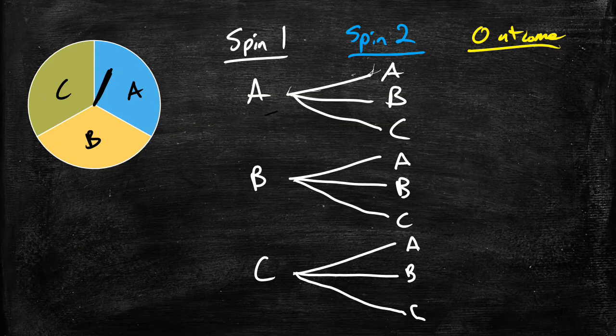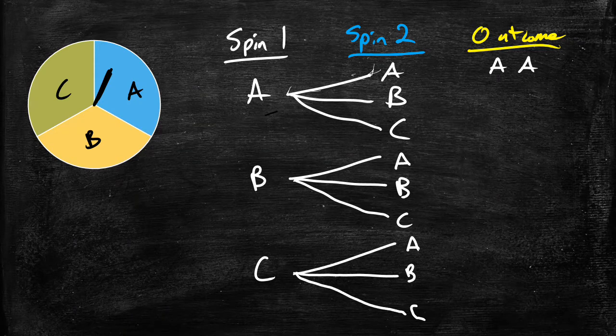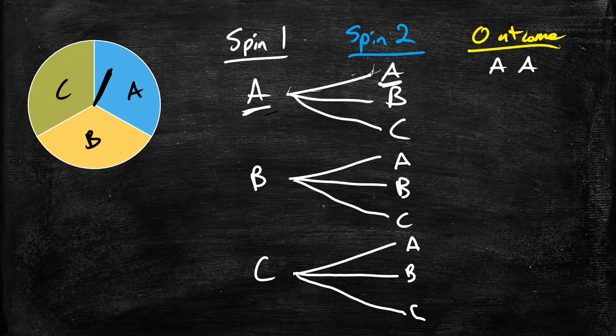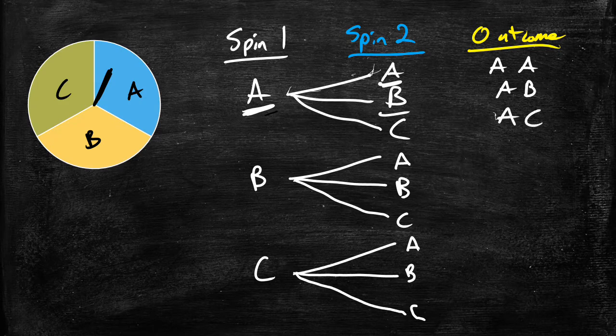And we can look at ultimately what the final outcome is. Say we care about what you get in both spins. So on the first spin you would get A, A. Because we have an A here and an A here. Second spin we can get an A, B. If we keep going down the list we get an A, C here.